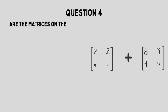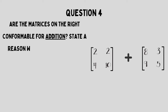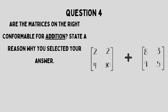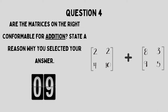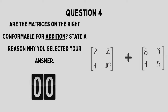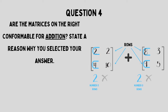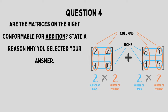So now we have two square matrices. Are these matrices conformable for addition? Yes, they are. Both of them have two rows and two columns — they are both of the same order.